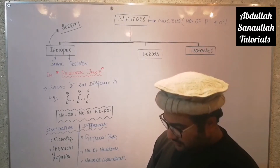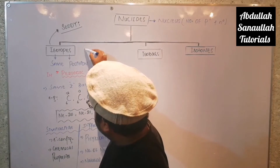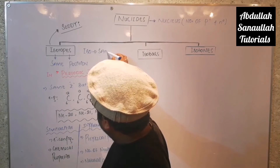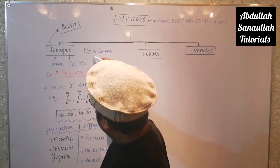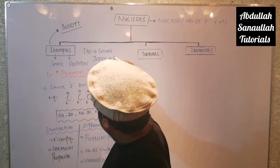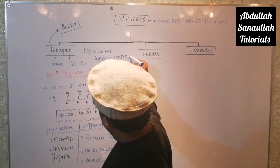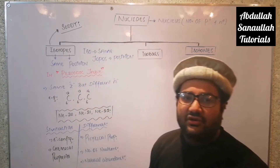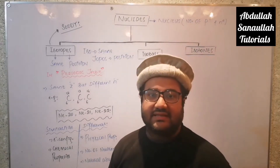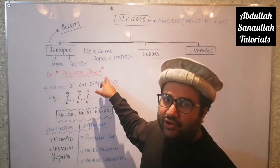The word 'isotope' is derived from two words: 'iso' means same and 'topos' means position. So the word isotope literally means 'same position' or 'same place,' and that same place is in the periodic table.